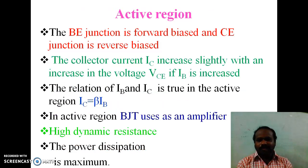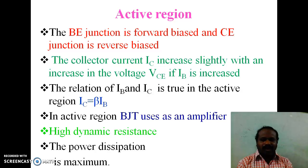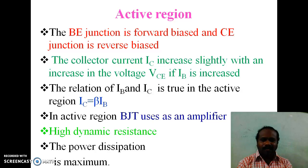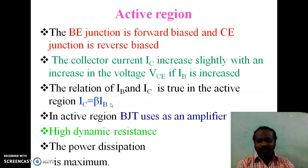Next, the active region. In the active region, the input junction — base-emitter junction — is forward biased, but the output junction — collector-emitter junction — is reverse biased. The collector current increases slightly with an increase in VCE voltage if IB is increased. We increase the base current from 0 to some value, then increase the collector-to-emitter voltage, and the output current IC slightly increases. The relation between input current and output current, IC and IB, is given by IC equal to β into IB. In the active region, BJT is used as an amplifier, and the power dissipation is maximum.